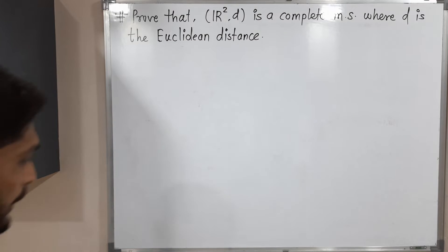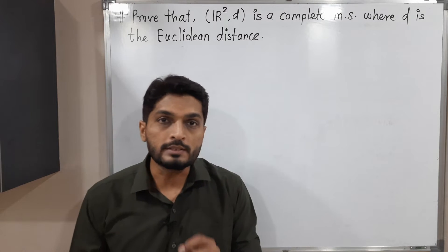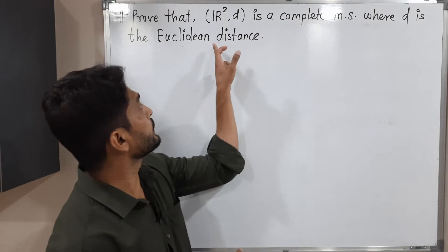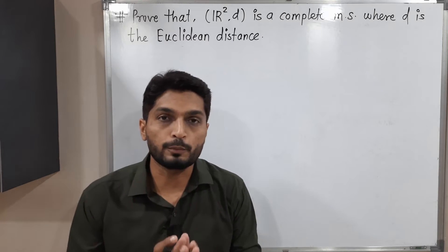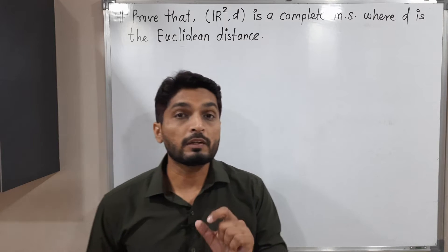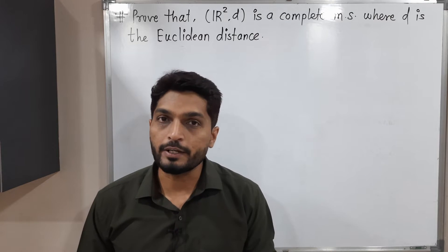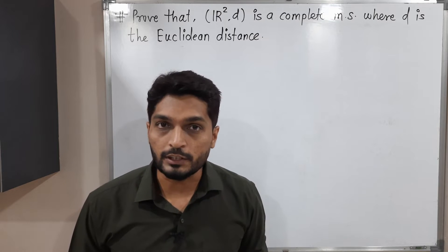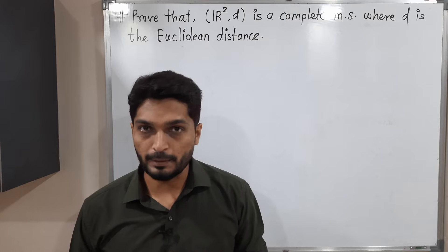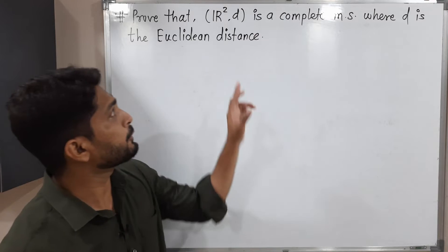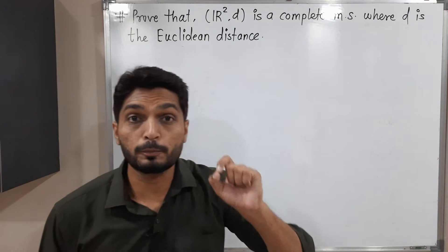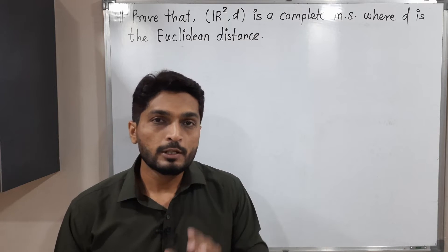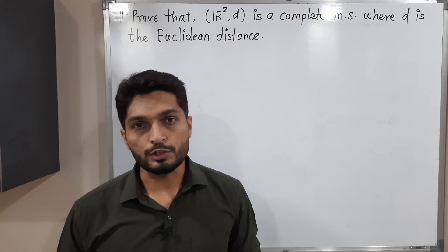In this video we are going to prove that ℝ² is a complete metric space with the Euclidean distance d. We have already seen in the last video that a metric space is complete if every Cauchy sequence is convergent. So here we have to prove every Cauchy sequence is convergent in (ℝ², d).